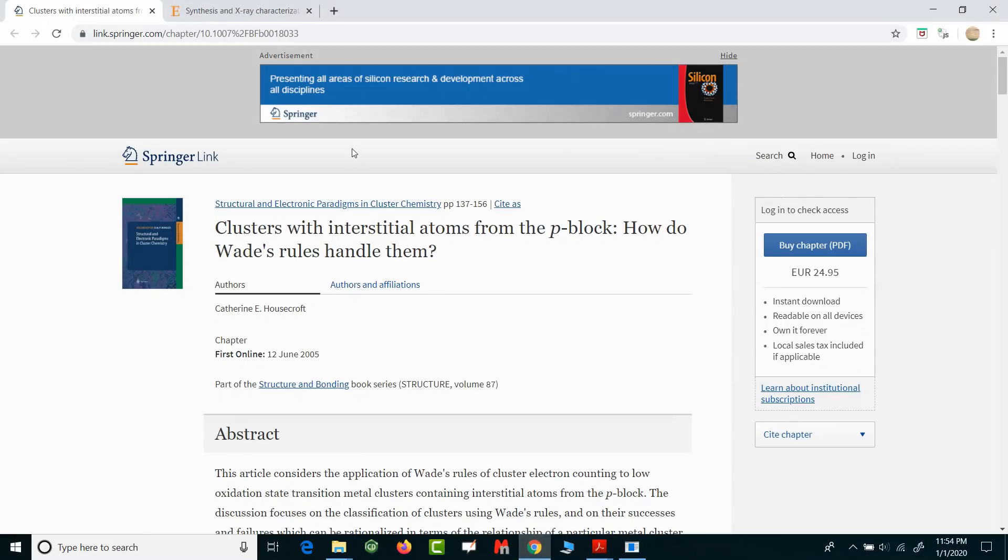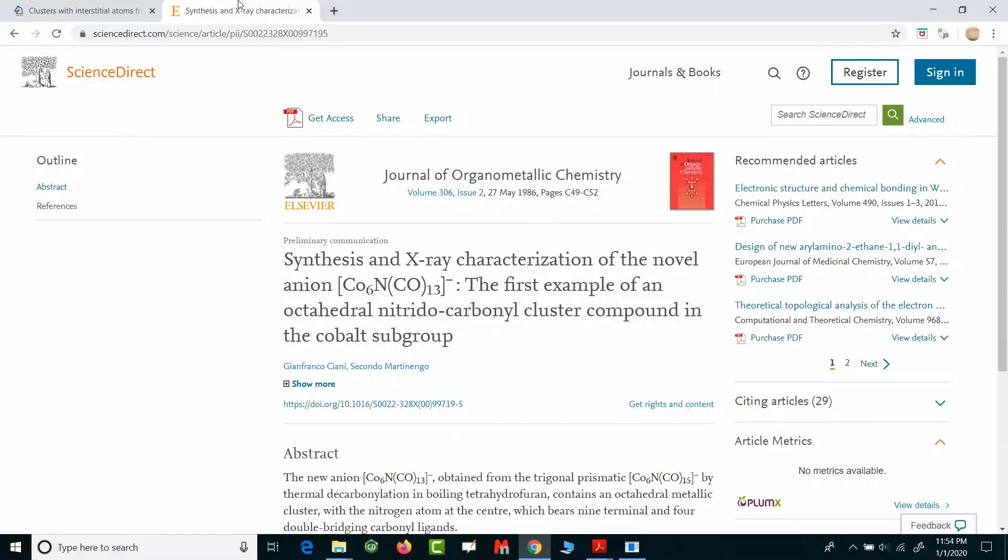If you want to add the back reference also, this is the paper that was published in 1986 where it is clearly mentioned that this one is an octahedral structure and it's closo in nature. It's 'Synthesis and X-ray Characterization.' This is a very well-reputed journal, Journal of Organometallic Chemistry, in 1986. In the Springer article there was a back reference, so this is the back reference. Here they have done the structure characterization using single crystal XRD and have given the cluster type for this particular molecule Co6(CO)13N-.